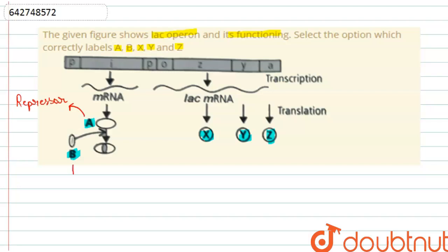B is the inducer. This inducer binds with the A so that to make the repressor busy. In this way, the operator gene can carry out the transcription.